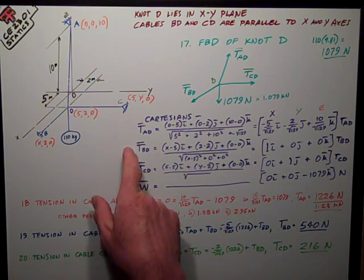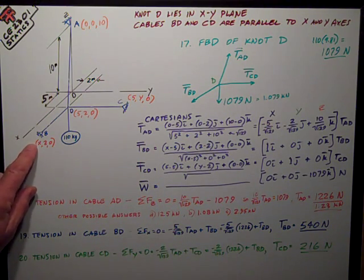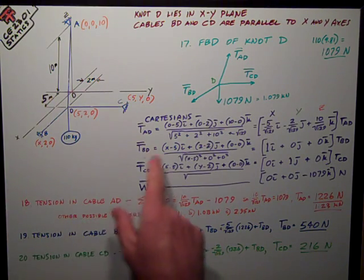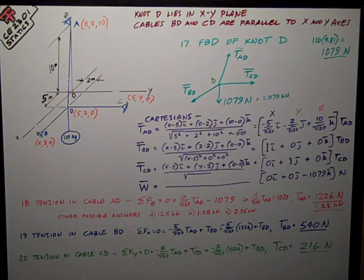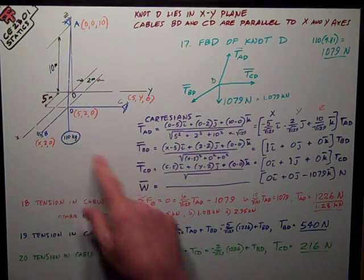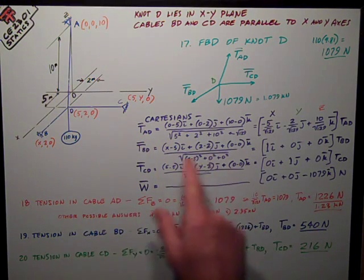The TBD is very similar, except we have this mystery point out here. It's the coordinates of B minus the coordinates of D, so I have x minus 5, whatever I choose. But you'll see how it all comes out in the wash. 2 minus 2 is 0, 0 minus 0 is 0, and the k.